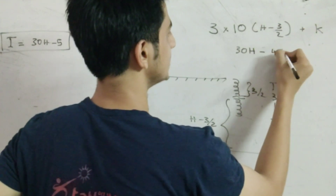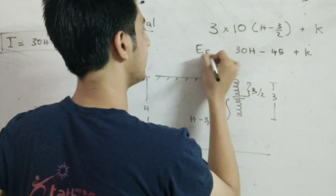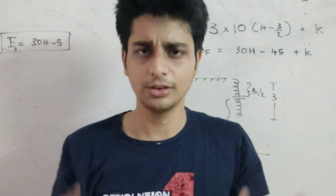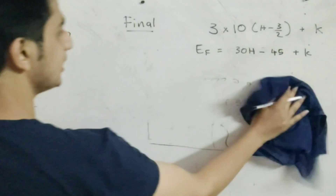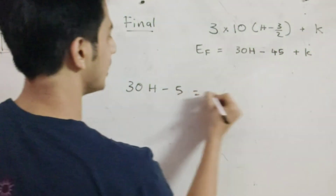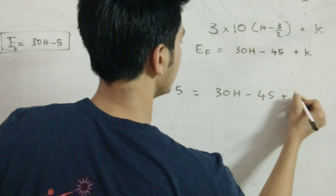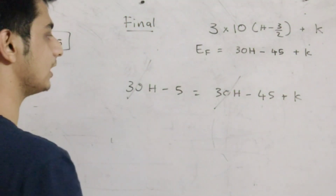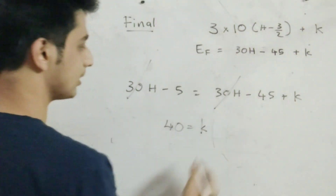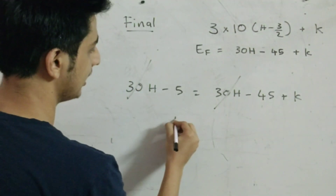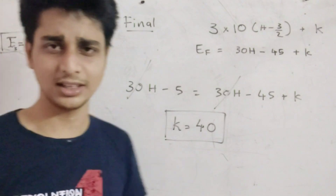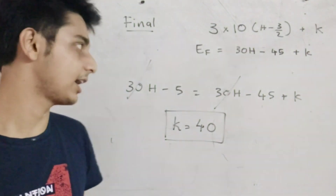E final energy. How do we know: initial energy equals final energy? We substitute: 30h minus 5 equals 30h minus 45 plus k. So k = 30h − 45 − 30h + 5 = −40... rearranging: 30h − 5 = 30h − 45 + k, giving k = 40. This is our answer.